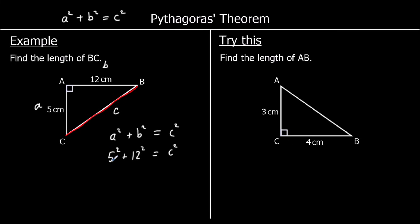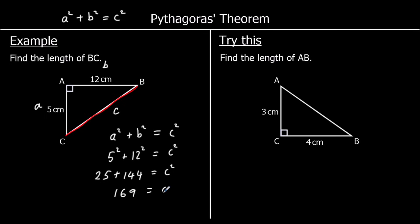That means that 5 squared plus 12 squared must be equal to the longest side squared. 5 squared is 25, and 12 squared is 144. So 25 plus 144 equals c squared, which is 169.